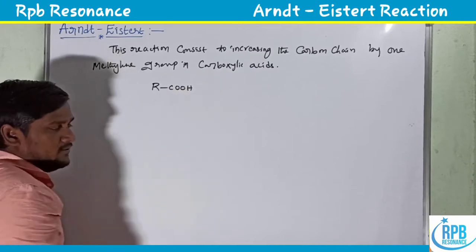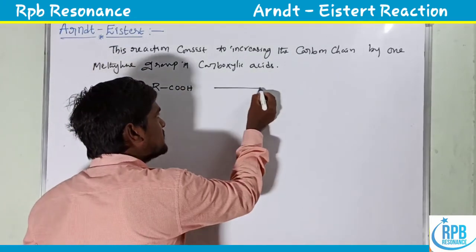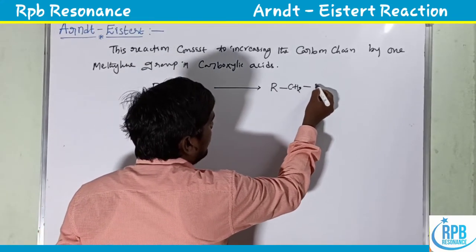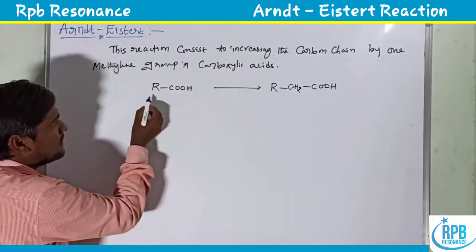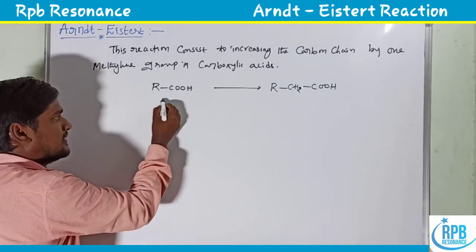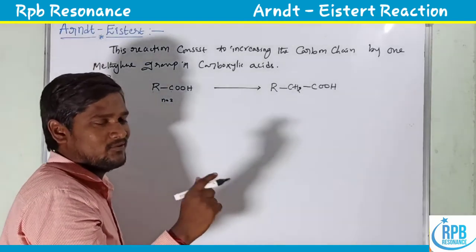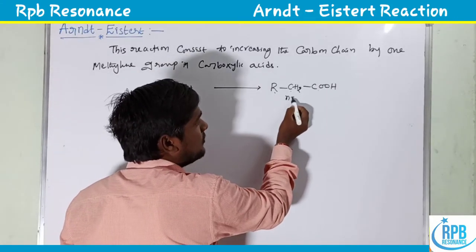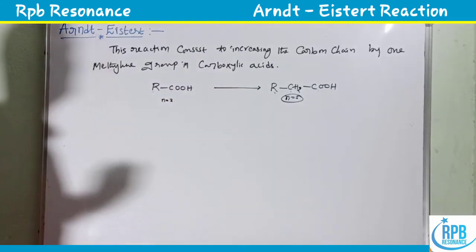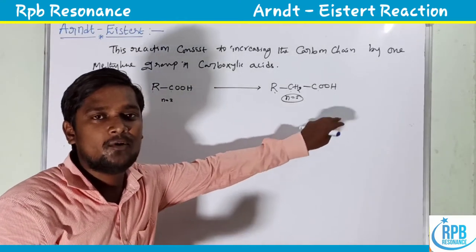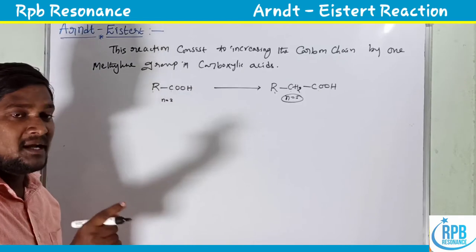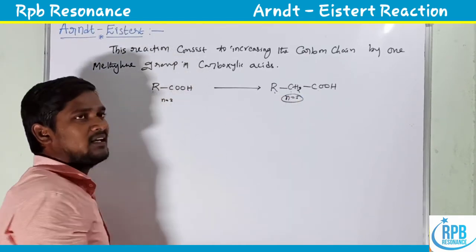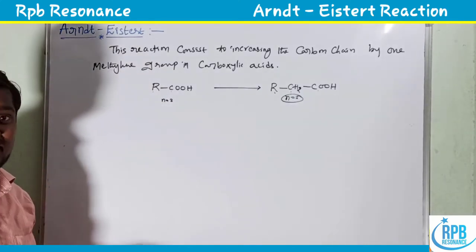The carboxylic acid is treated with some reagents which convert it into a carboxylic acid with one extra carbon. If n equals 2 and R equals 1, then the product has n equal to 3 carbons. So the number of carbon atoms increases on the product side — increasing the carbon chain by one methylene (CH₂) group in carboxylic acid is called the Arndt-Eistert reaction.